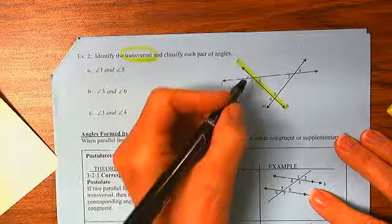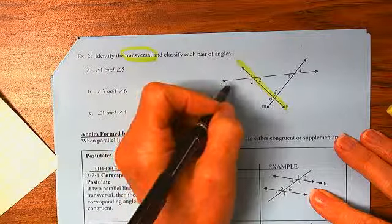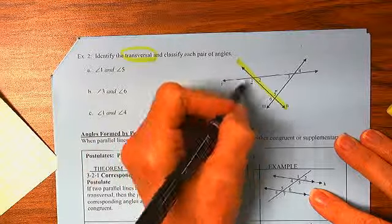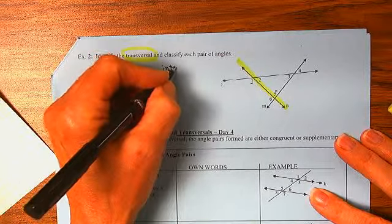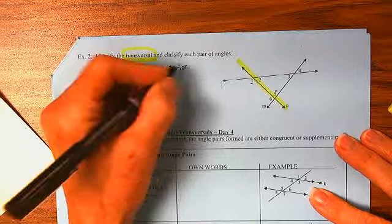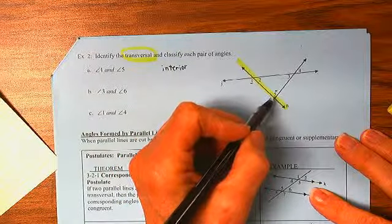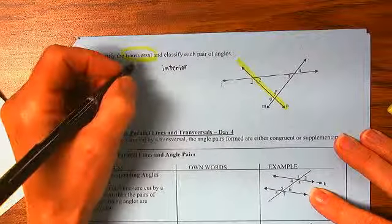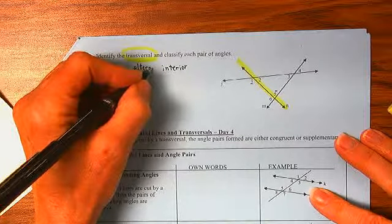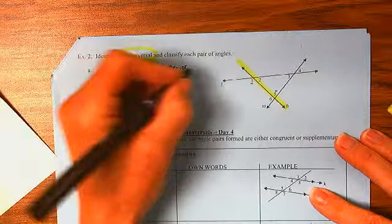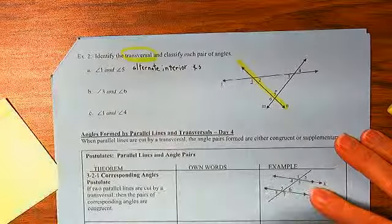Angles 1 and 5. Angles 1 and 5. Well, they are between the two angles, so they have to be interior. They're between my two lines. And they are on opposite sides of the transversal, so they are alternate.